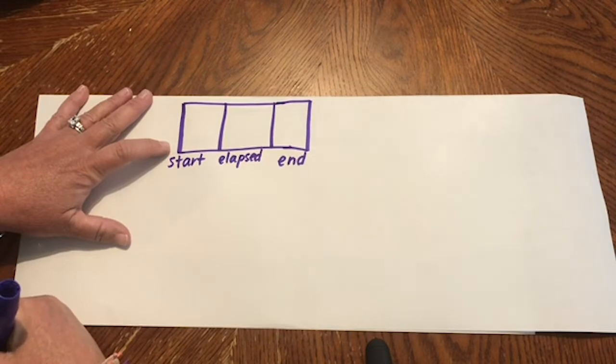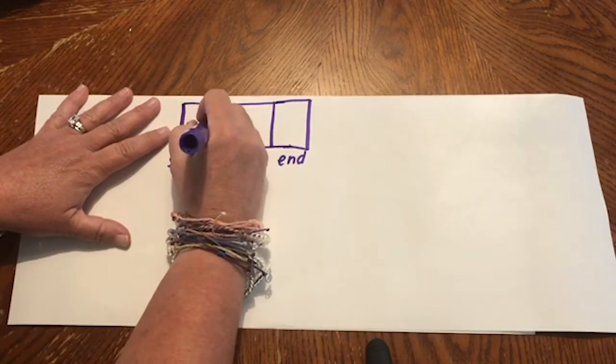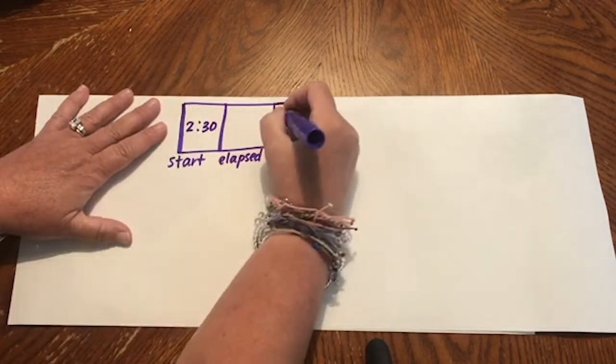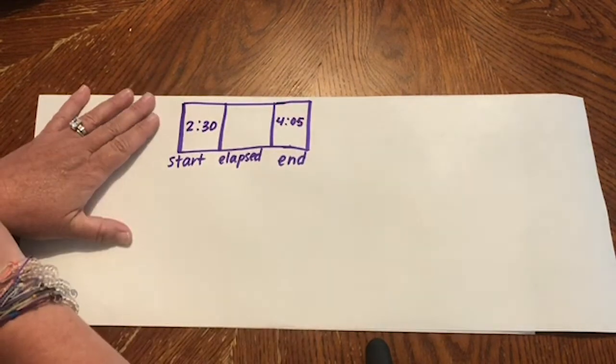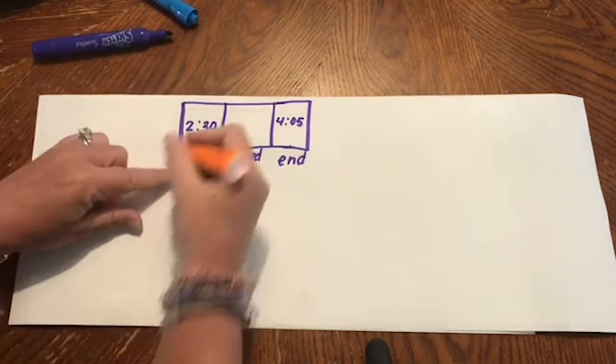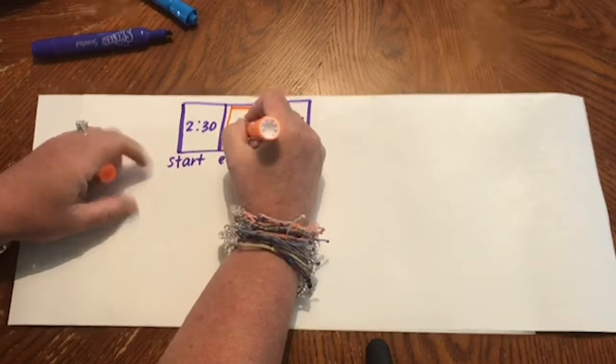The start time of the movie, if you were paying attention, was 2.30. And if you caught a glimpse of the clock at the end of the movie, you'll notice it was 4.05 when the movie ended. So the elapsed time is the unknown portion of the movie that we need to figure out.